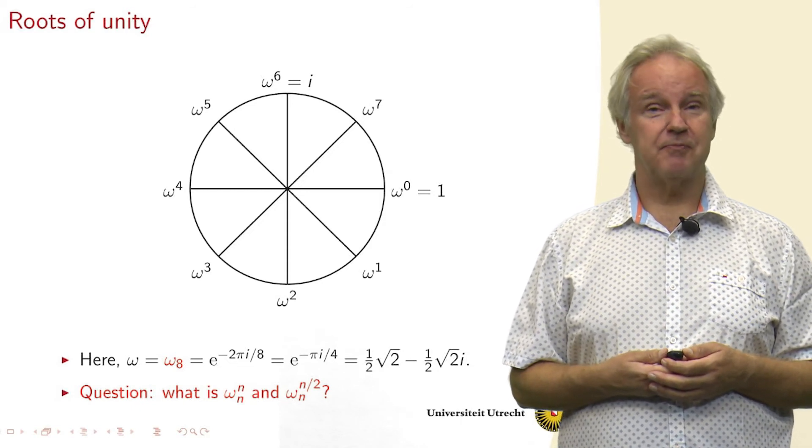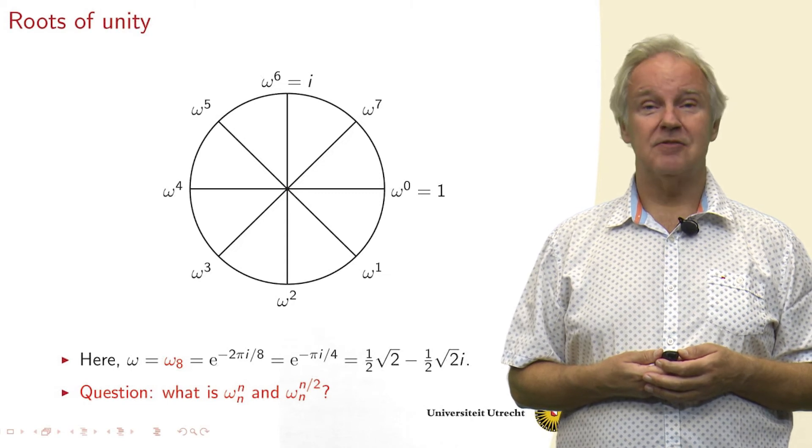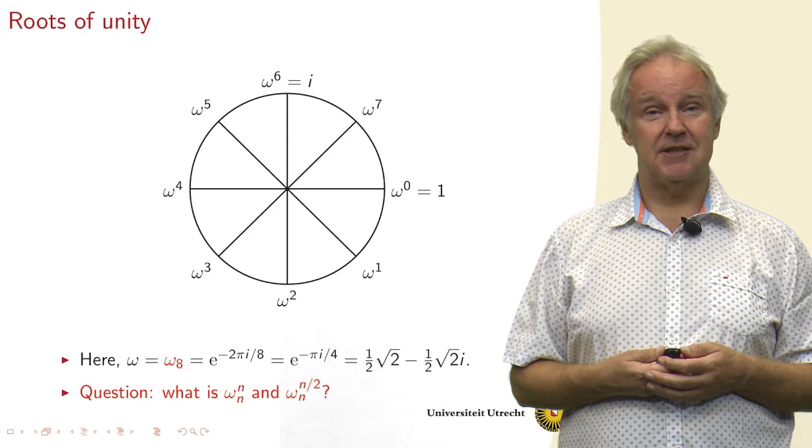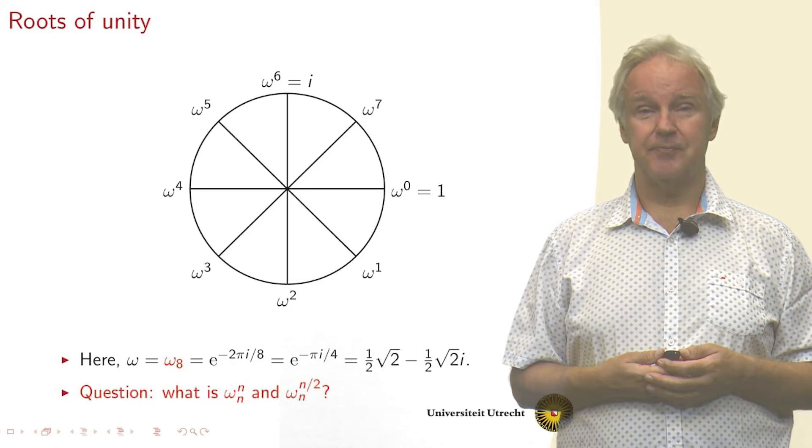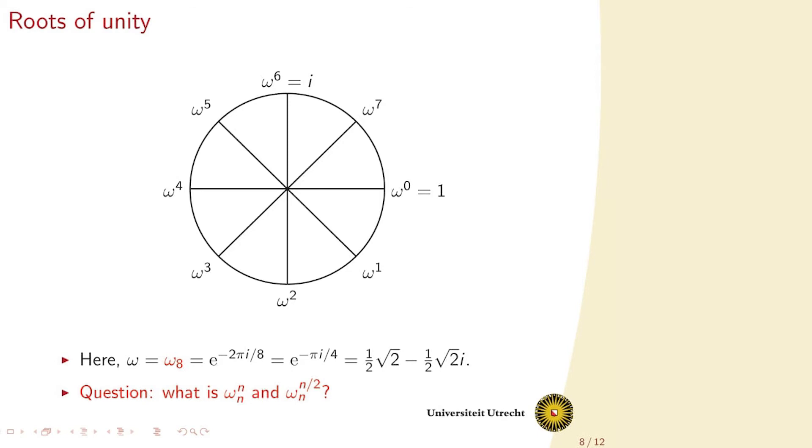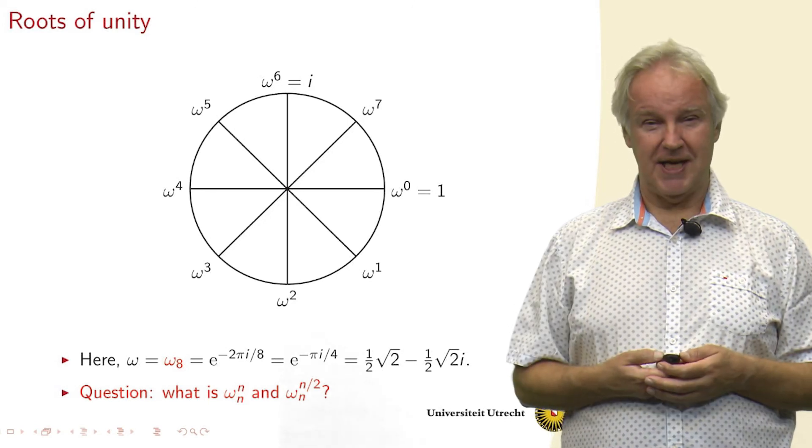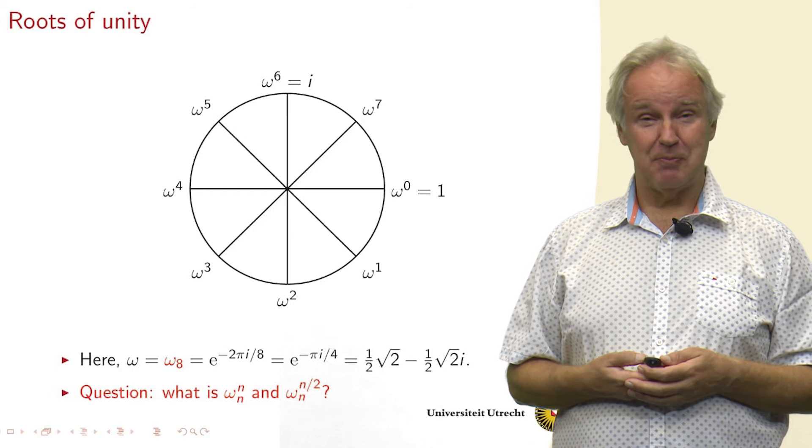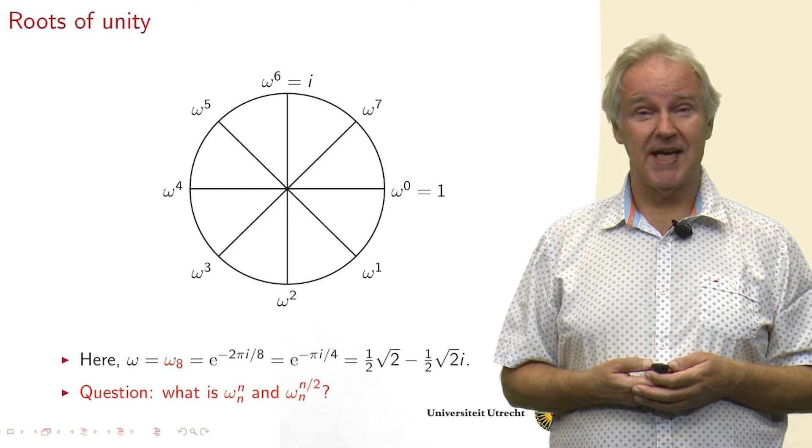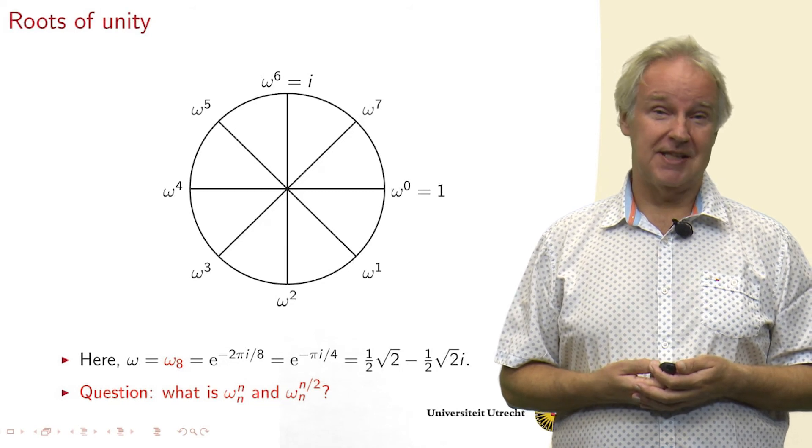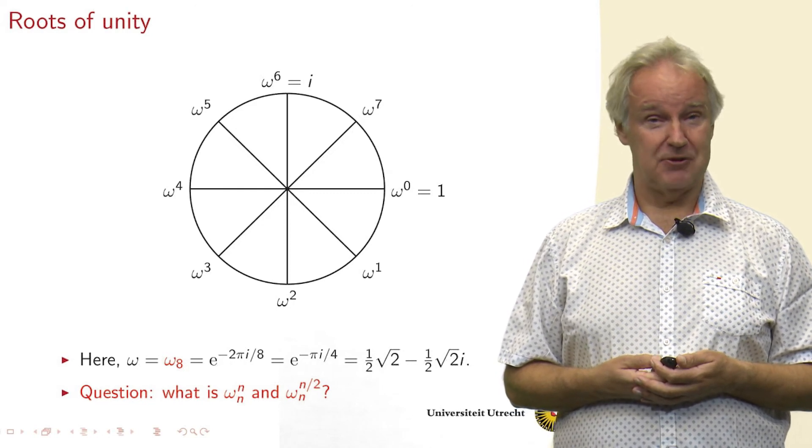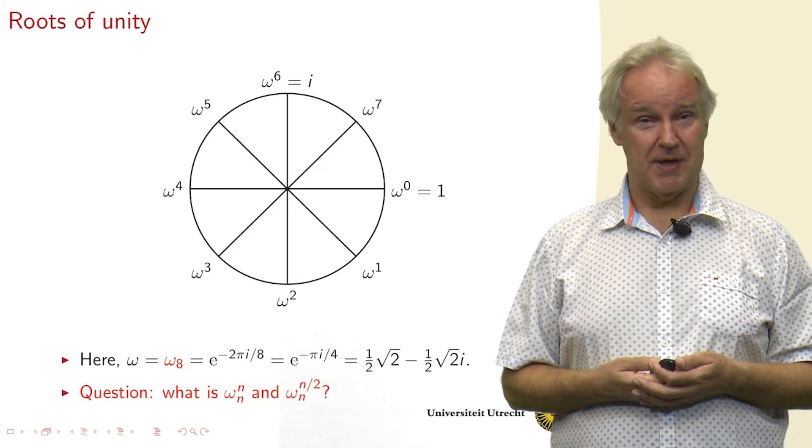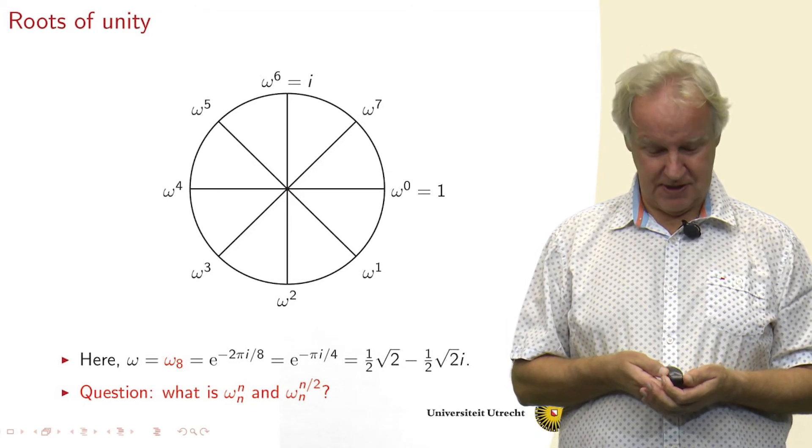Now I have a question to you. What is omega n to the power n? And related to this, what is omega n to the power n over 2? Okay, you may get it. Omega n to the power n is a full circle. We get back to 1. So that's the answer. And then omega n to the power n over 2 is half a circle. So we get omega n to the power n over 2 equals minus 1. And these are useful relations later on.